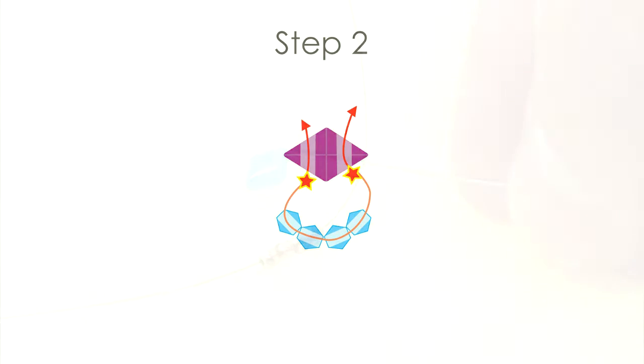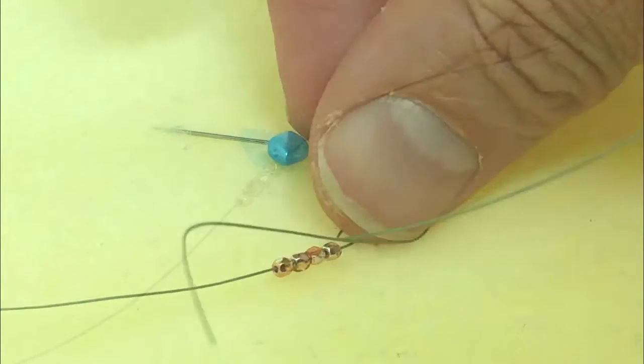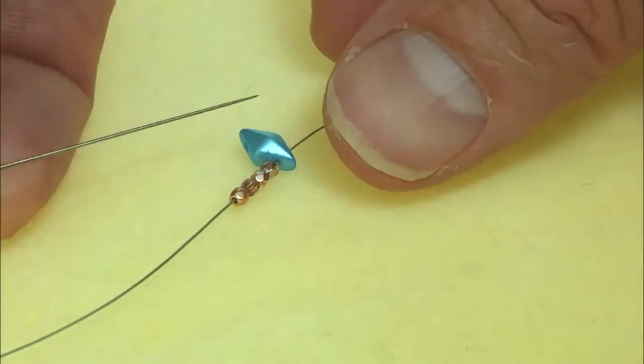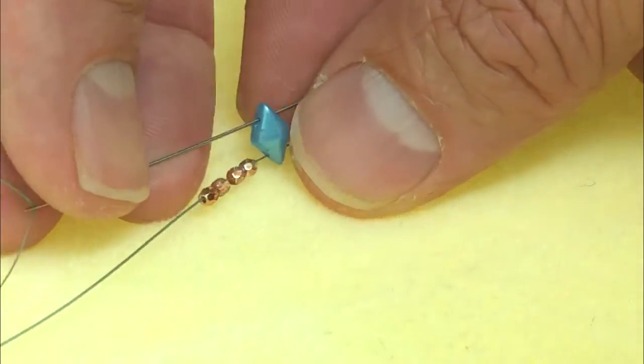Second step, thread the right hole of a Diamond Duo using the right length of thread, and thread the left hole using the left length of thread. This completes the seed bead loop.